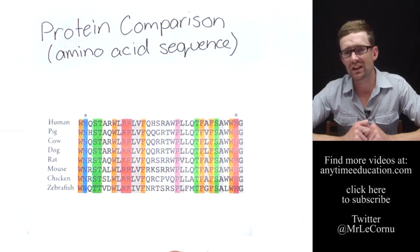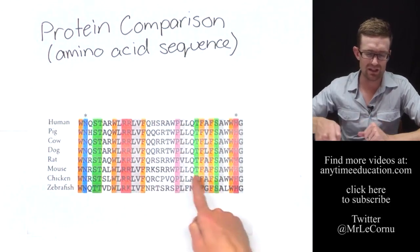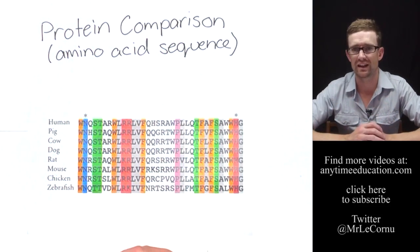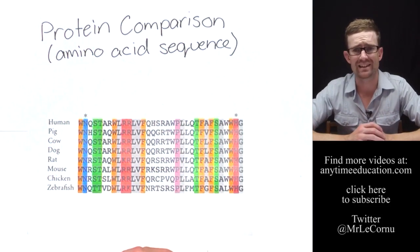Whereas with dog and chicken there were 10 differences in the amino acids, which suggests a lot of differences in the DNA. And between human and pig there were 8 differences, which suggests there are quite a bit of difference in the DNA there also.